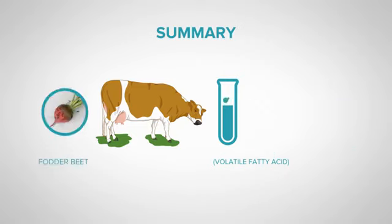By the end of this video, you should be able to name the three different types of carbohydrates, describe what happens to these when the cow eats them, and how they impact on cow production and performance.